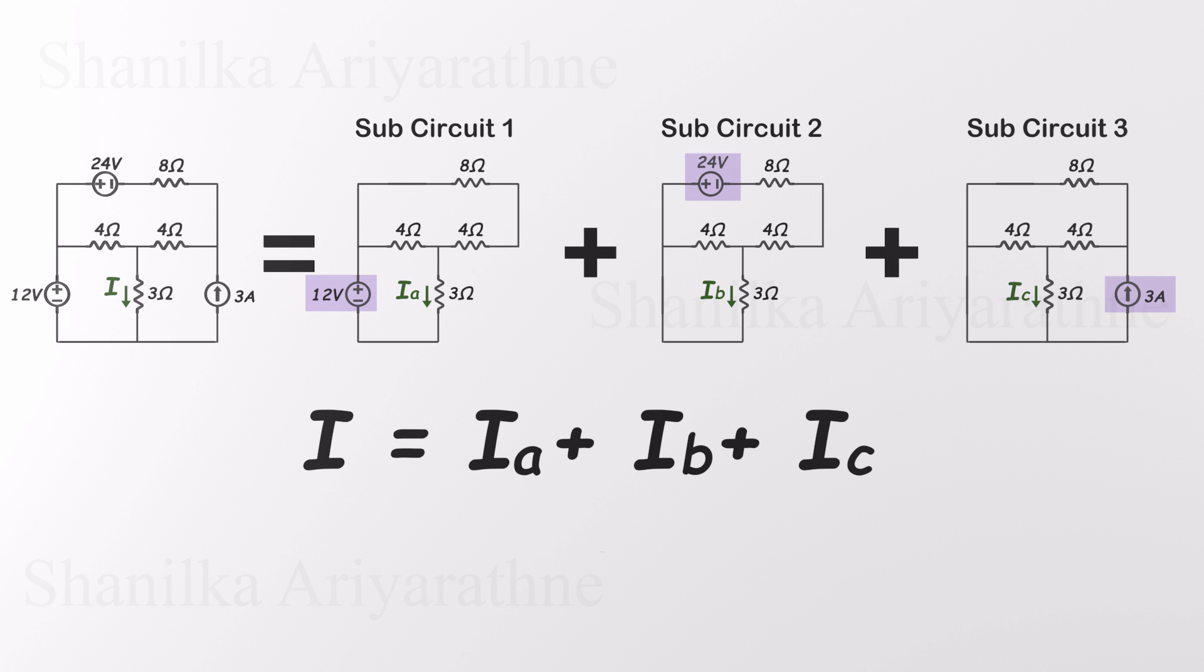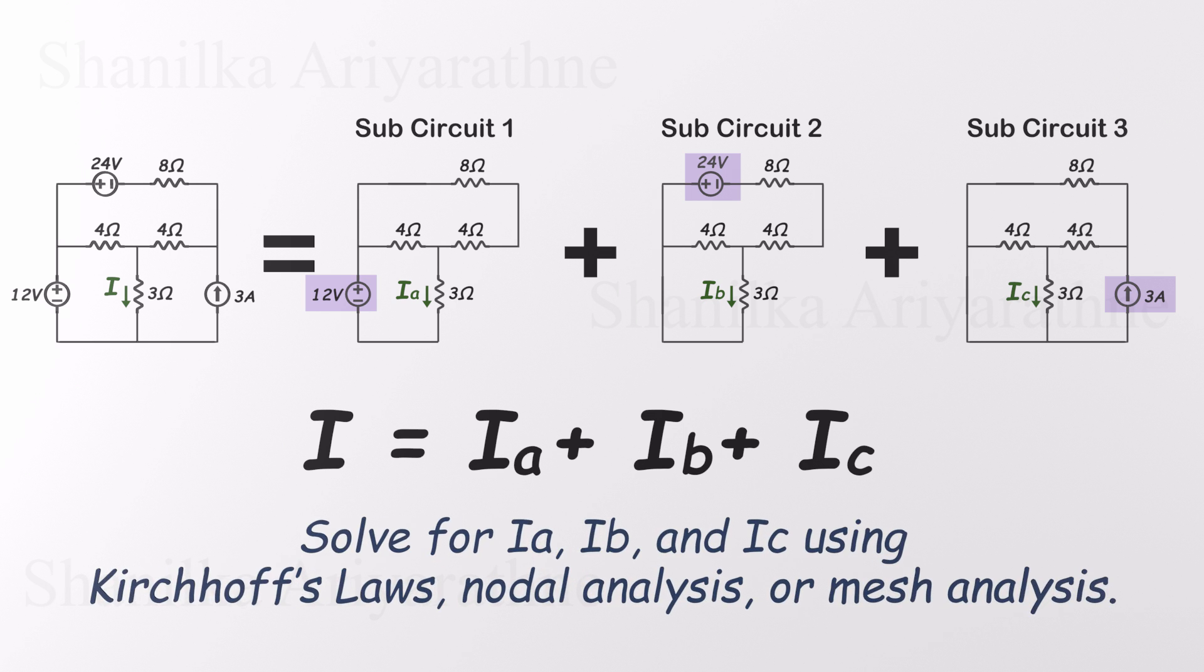Next, we'll solve for IA, IB, and IC one by one. You can use any method you like – Kirchhoff's Laws, nodal analysis, or mesh analysis – as long as it helps you find the current for each sub-circuit. I'll go ahead and use Kirchhoff's Laws here, but whatever method you choose, you should end up with the same final result.